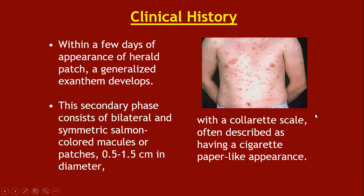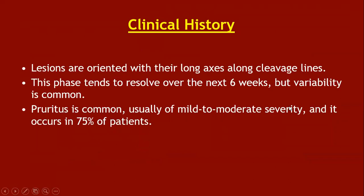This appearance is very similar to secondary syphilis, except for the presence of the herald patch; any patient presenting with such a rash should be ordered VDRL and TPHA to rule out secondary syphilis. Lesions are oriented with their long axis along the cleavage lines. This phase tends to resolve over the next six weeks, though variability is common. Pruritus is common, of mild to moderate severity, and occurs in 75 percent of patients.